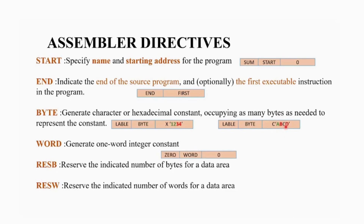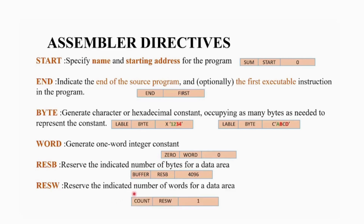Next is WORD. WORD generates a one-word integer constant. For example, 'WORD 0' — WORD is the assembler directive and the operand is the value. This generates a one-word integer constant. Then we have RESB, which reserves a number of bytes for the data area. For example, 'BUFFER RESB 4096' reserves 4096 bytes for BUFFER. Similarly, RESW reserves a number of words for the data area. For example, 'COUNT RESW 1' reserves one word in the data area.